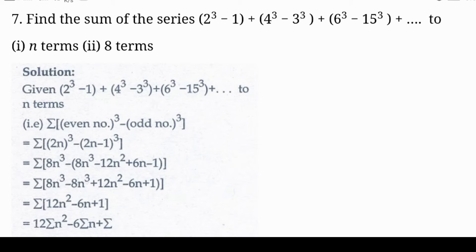Now we are going to find the sum of the series: 2 cubed minus 1 cubed, plus 4 cubed minus 3 cubed, plus 6 cubed minus 5 cubed, and so on. In the first subdivision we have n terms, and in the second subdivision we have 8 terms.